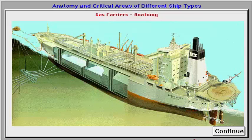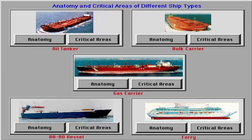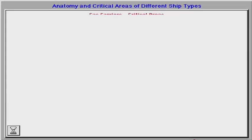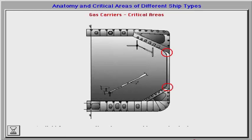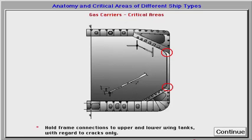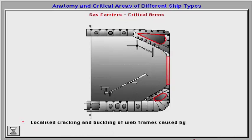The most common liquefied gas carrier is the LPG design, which has an independent fully insulated cargo containment system consisting of a number of tanks located in a conventional hull, much like an ordinary bulk carrier. The basic hull of a gas carrier has much in common with the hull of a conventional bulk carrier and will also have some of the same problems, such as hold frame connections to upper and lower wing tanks and lower wing tanks with regard to cracks.